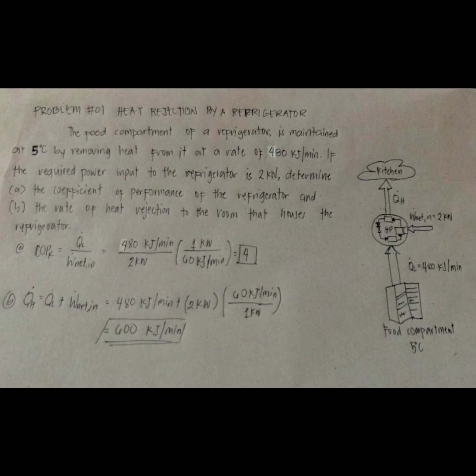The coefficient of performance of the refrigerator is: COP_R equals Q_L over W_net_input, which equals 480 kilojoules per minute over 2 kilowatts, multiplied by 1 kilowatt over 60 kilojoules per minute.